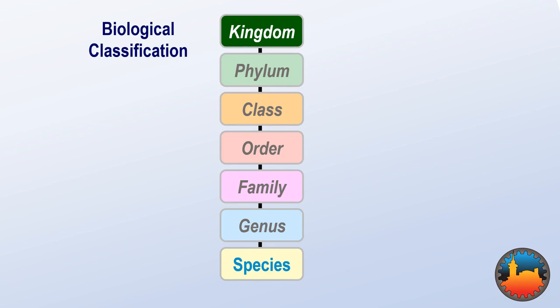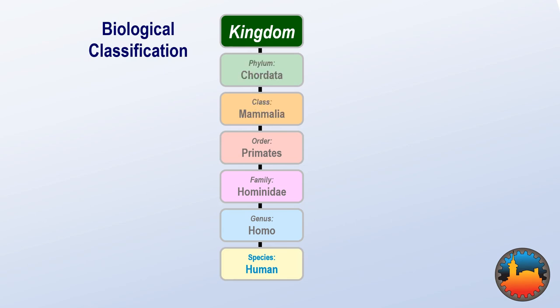We have seven different levels. For humans as an example: the species is human, the genus is Homo, the family is Hominidae, the order is primates, the class is mammal, the phylum is animals with backbones, and the kingdom is multicellular animals.